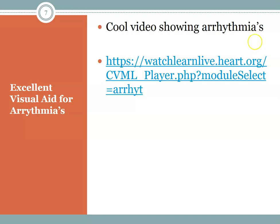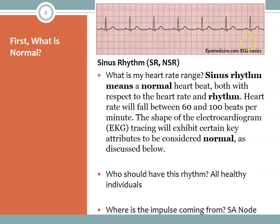There is a great website shown in class with different types of arrhythmias that is a helpful visual aid. First, we must always know what's normal in order to understand what's abnormal. Sinus rhythm is normal — all healthy individuals should have this. The initial impulse comes from the SA node, the natural pacemaker, meaning it is a normal heartbeat with a heart rate between 60 and 100 beats per minute, and the EKG tracing will show equal distance between each QRS wave.